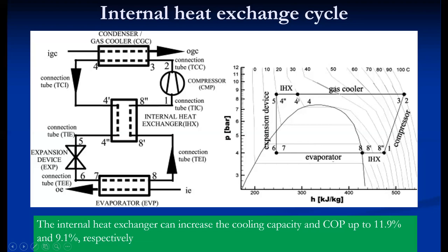Four to four-dash remains the same, assuming no heat leak or heat gain in this piping. Four-dash to four-double-dash is where the heat is exchanged with the other fluid. This is the hot line and this is the cold line. This particular line is the high pressure gas line — not a liquid line as in conventional systems. This high pressure gas line cools the low pressure gas line coming out from the evaporator. So a temperature drop happens in the gas cooling line, that is four-dash to four-double-dash.